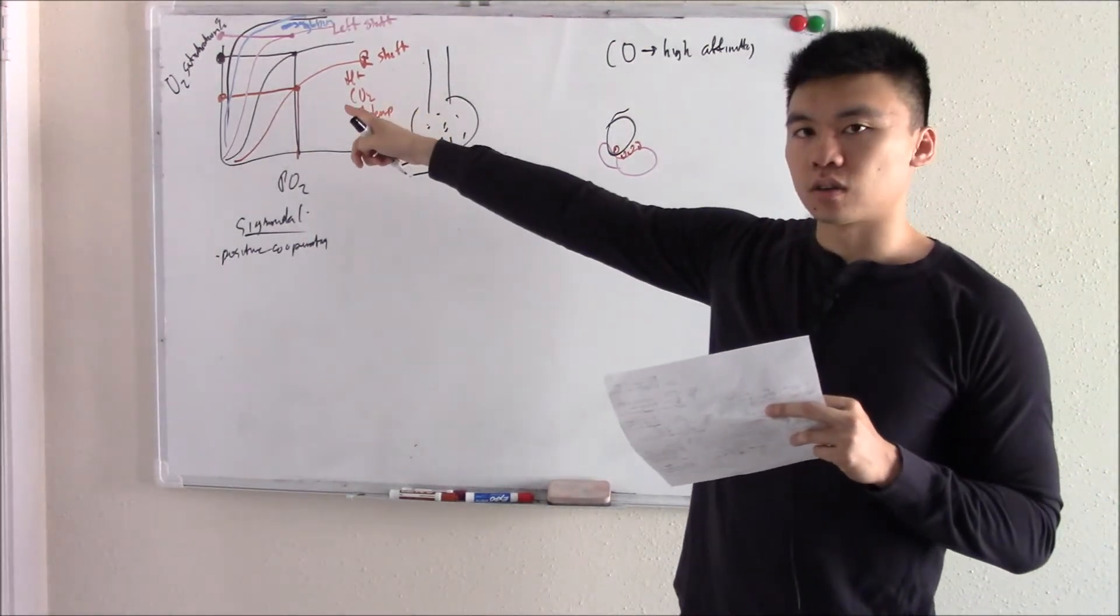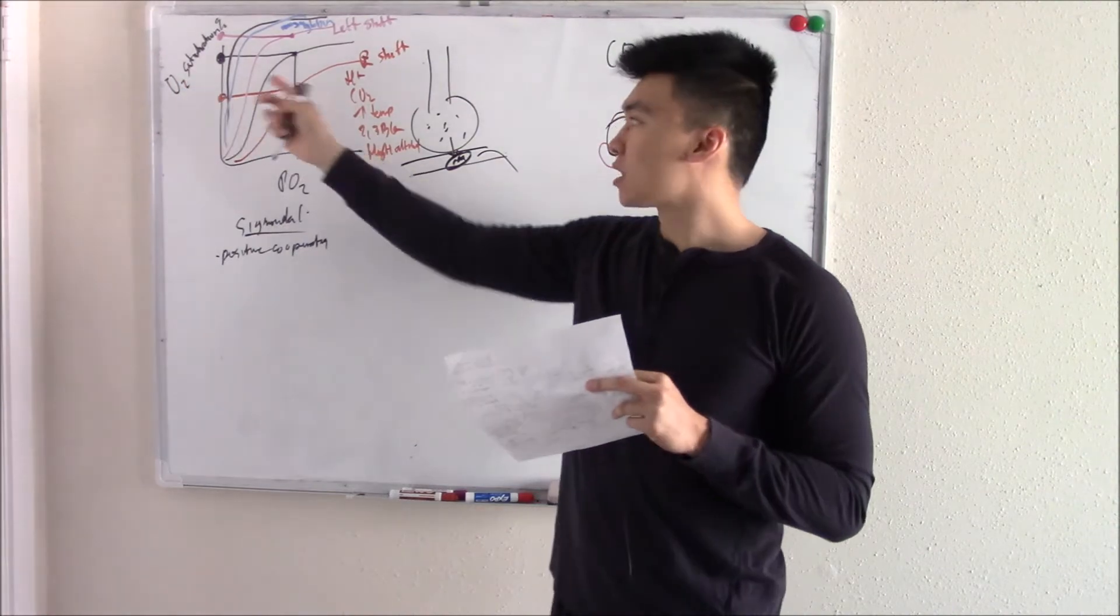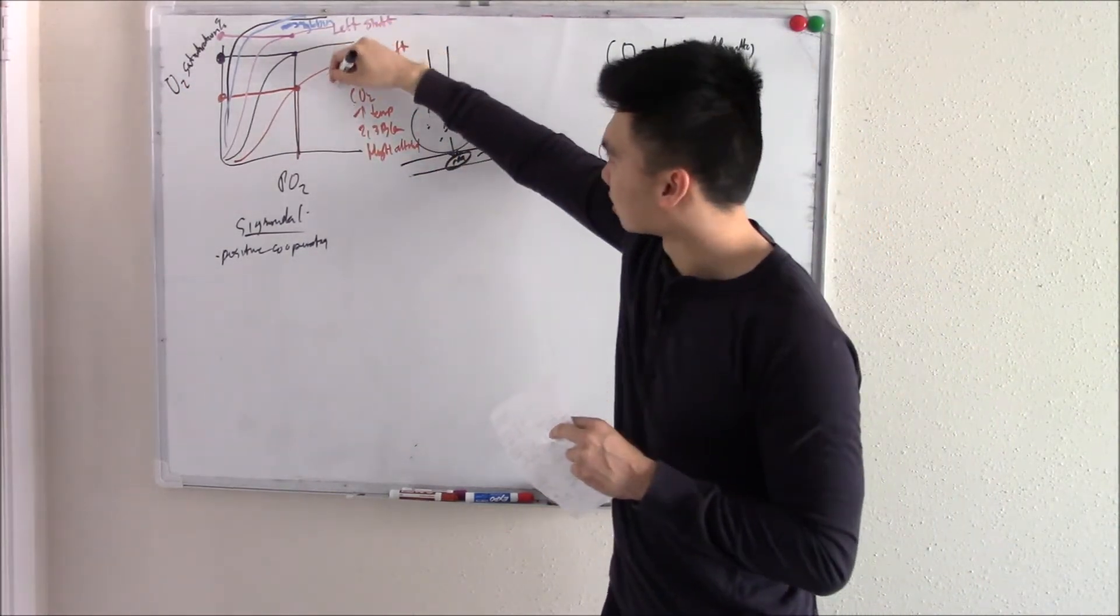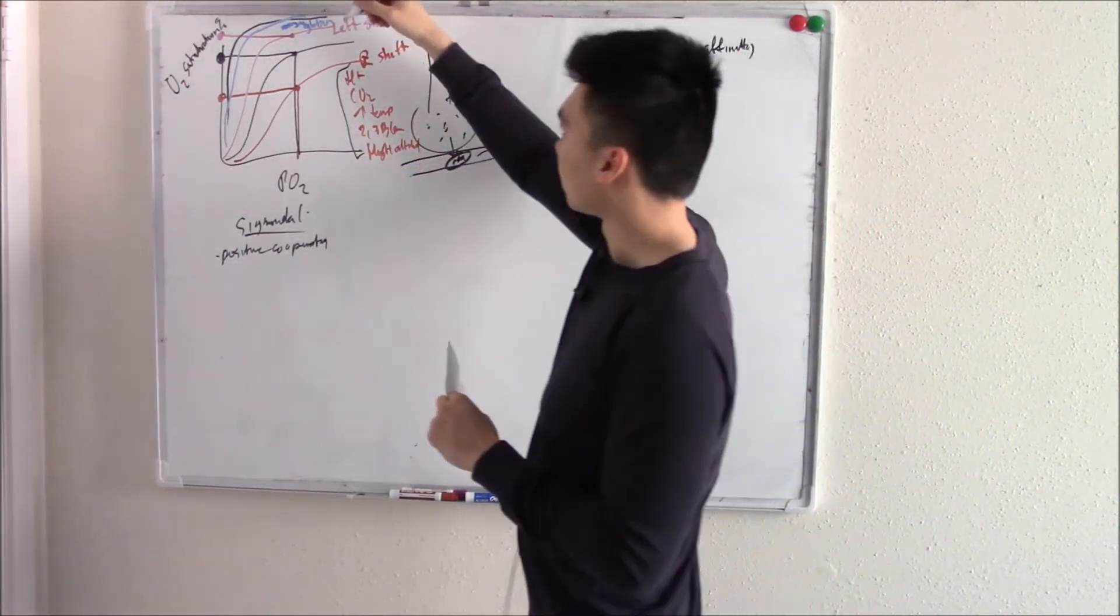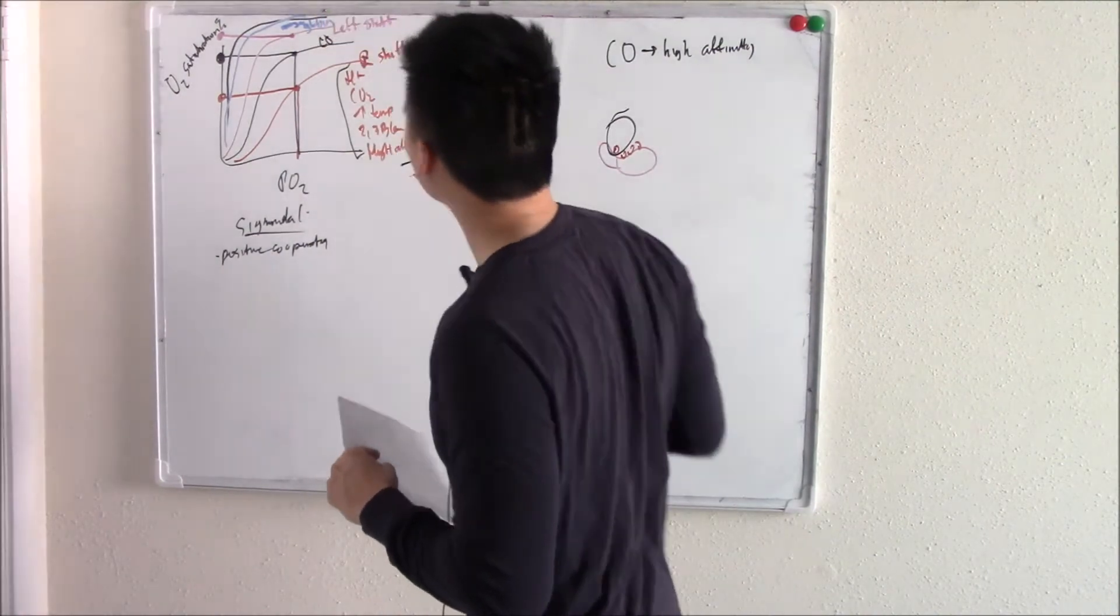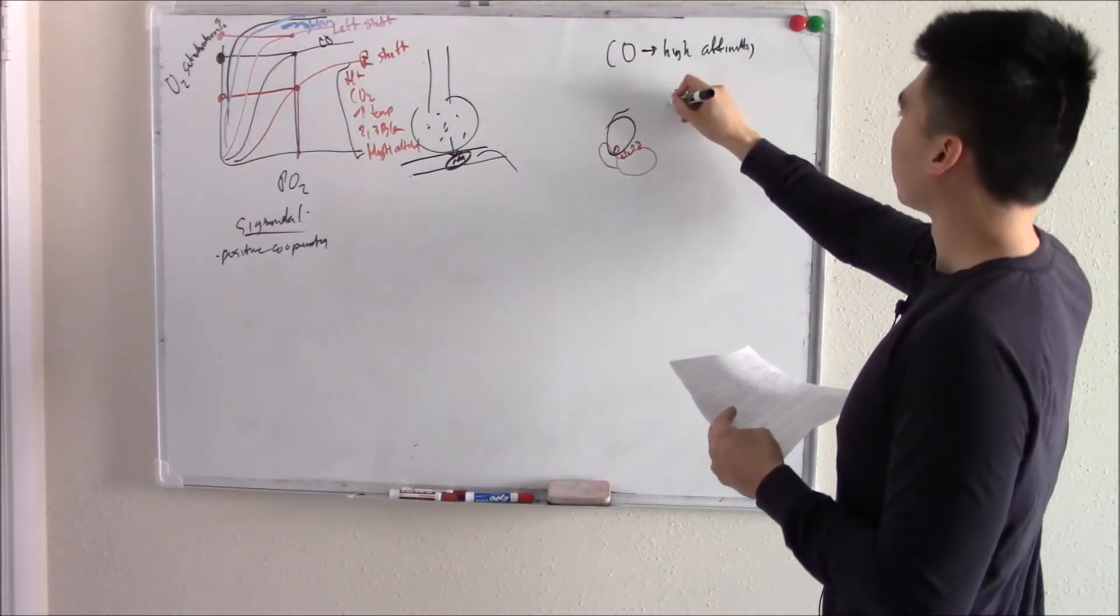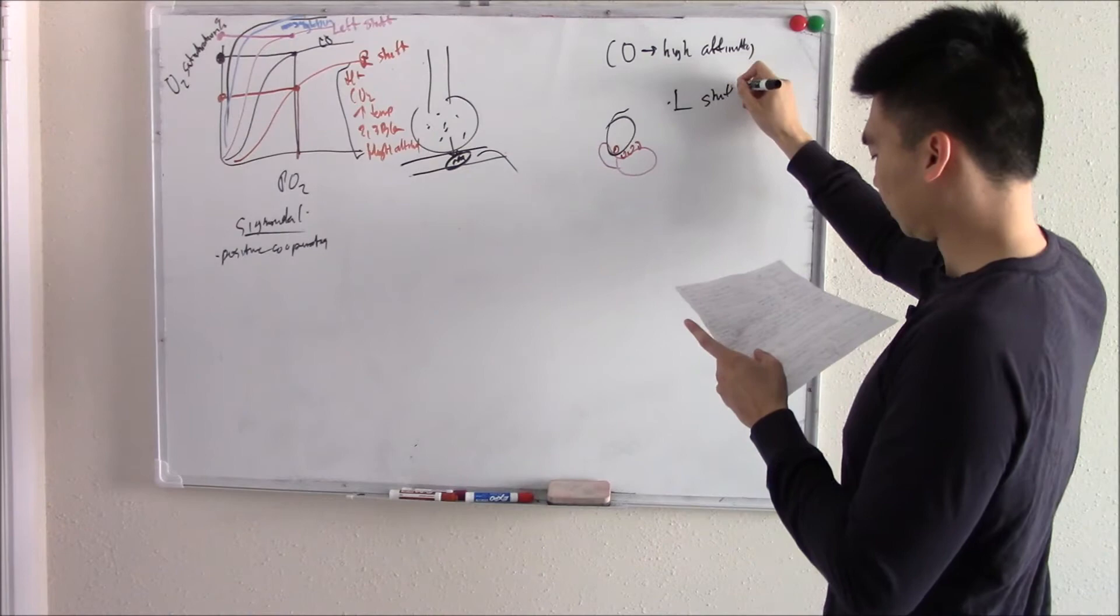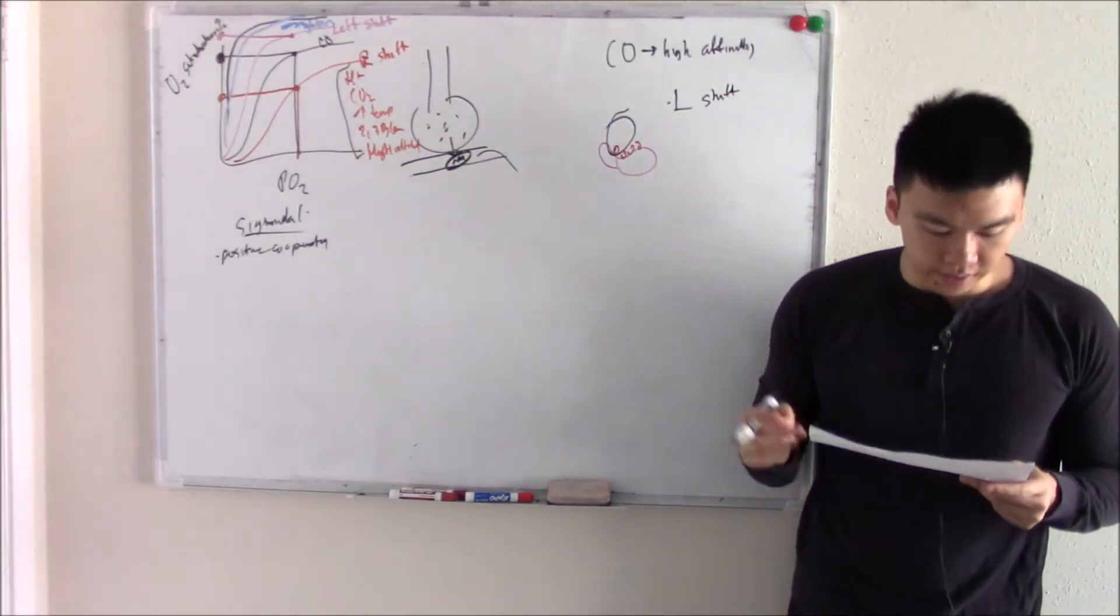Does that right shift your curve or left shift your curve? Right shift is when you release oxygen. So it will left shift your curve. Carbon monoxide. Now, here's the tricky thing: do these people look cyanotic? Do they look blue?